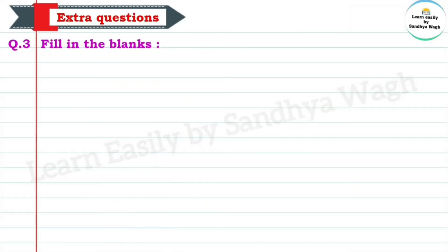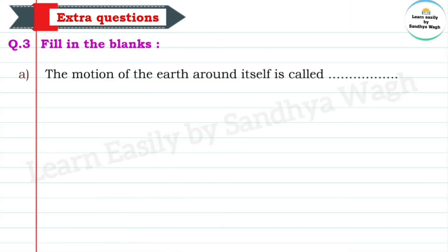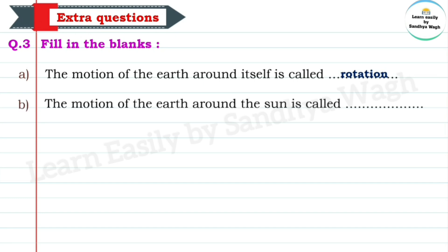Question 3 - Fill in the blanks. A: The motion of the earth around itself is called rotation. B: The motion of the earth around the sun is called revolution.